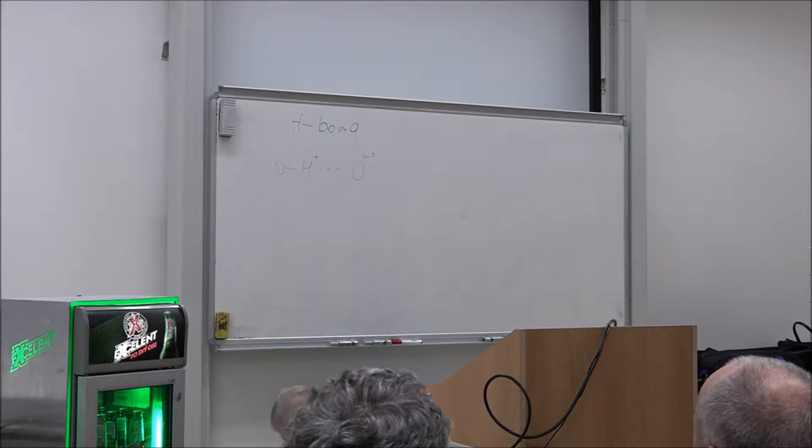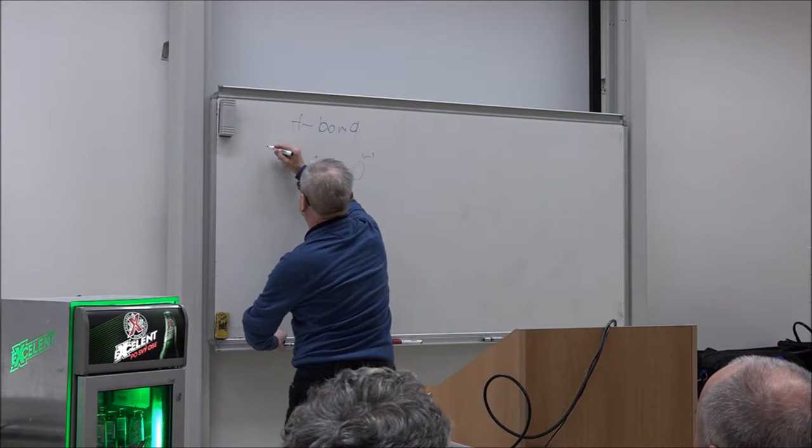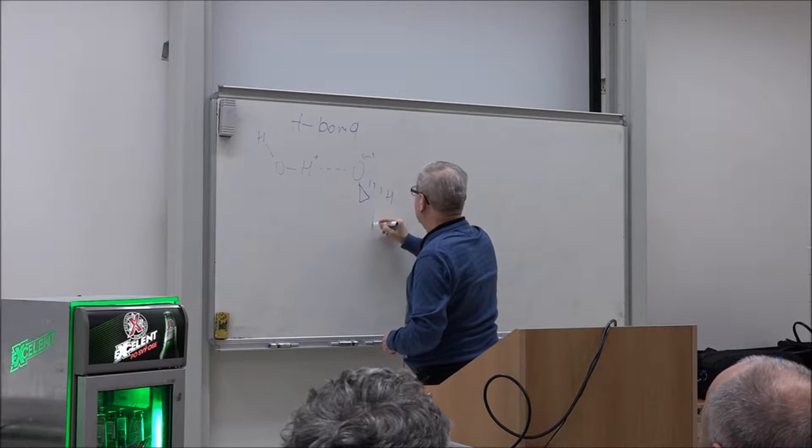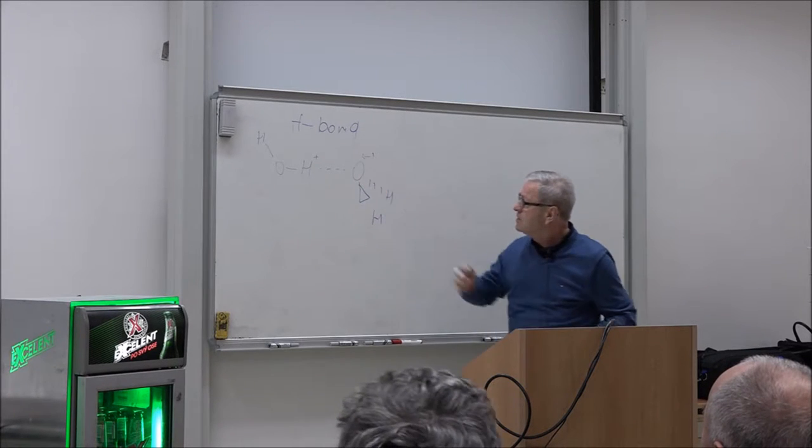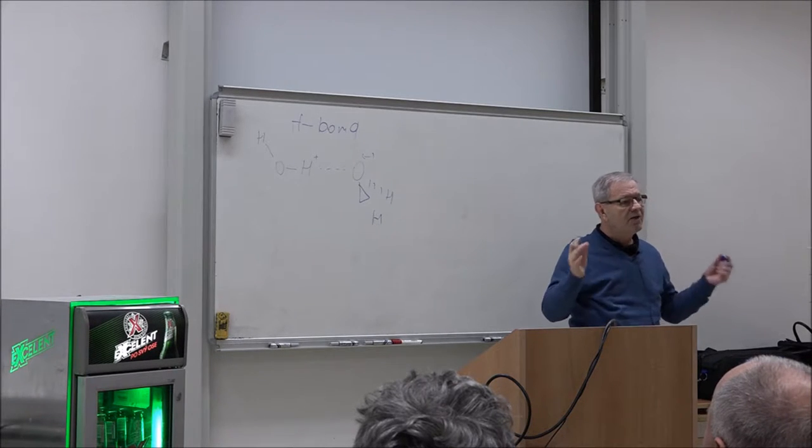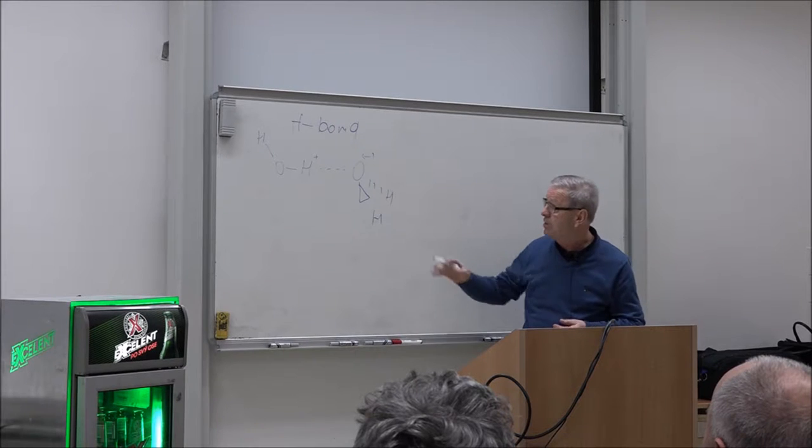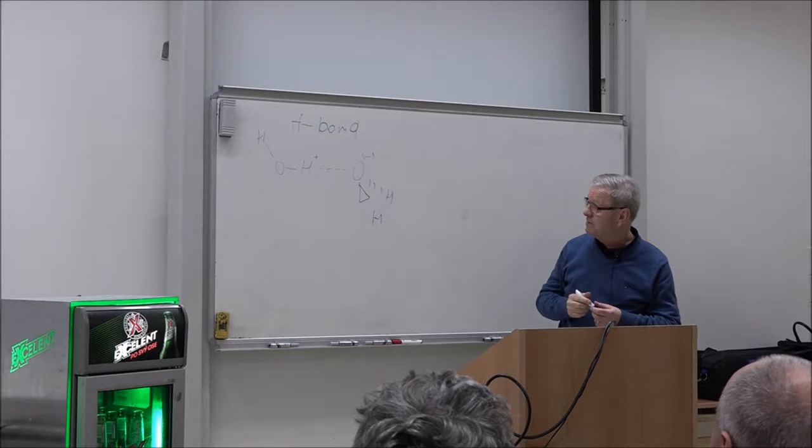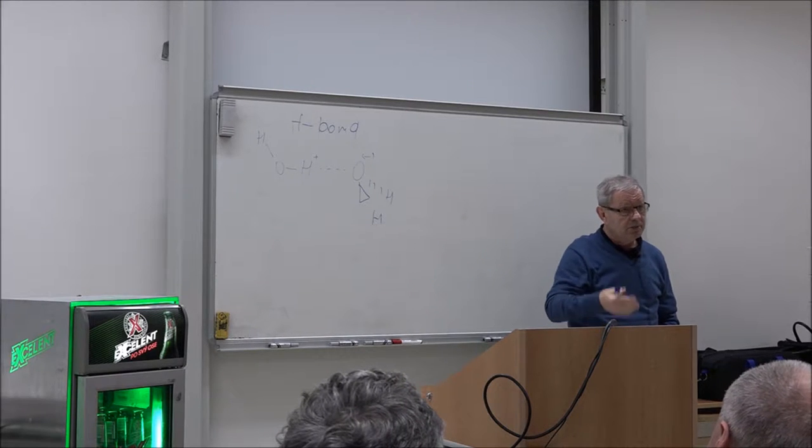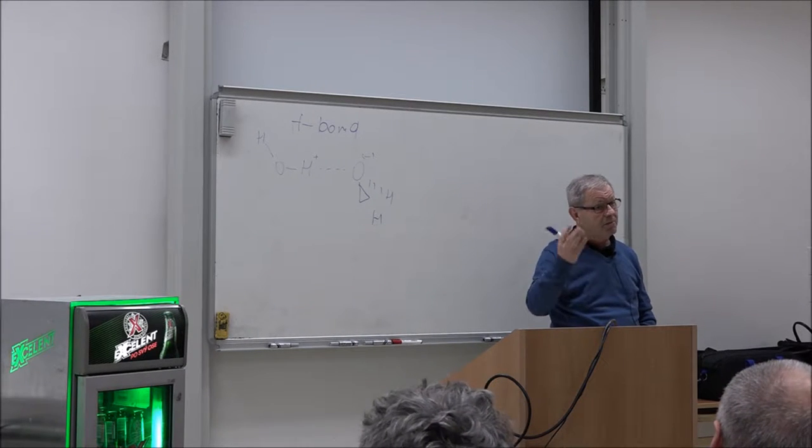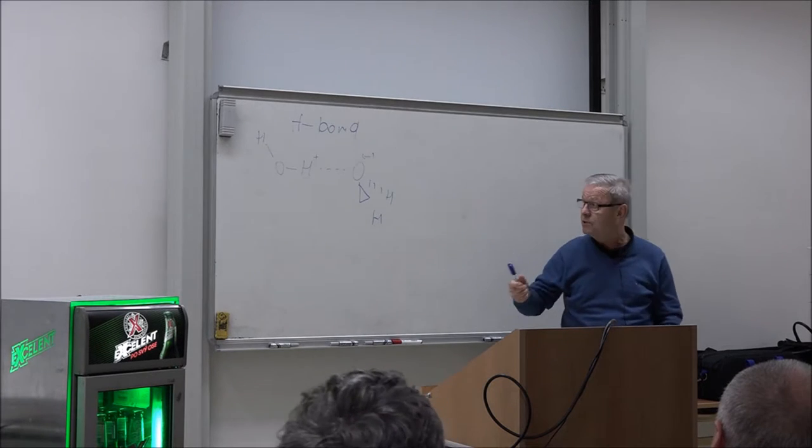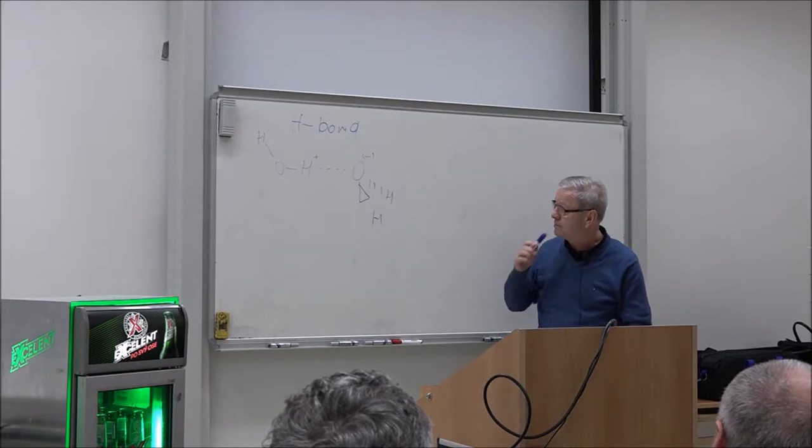I started here. This is the water dimer. And we have a very strong interaction between those two molecules, about 5 kilocalories per mole. The covalent body is about 100. So, 5 kilocalories per mole for non-covalent interaction, it is very, very strong. Why this is important? Structure and properties of water, but also structure and properties of biomacromolecules. Structure of DNA, we know why it is important. Hydrogen bonding plays a very important role.